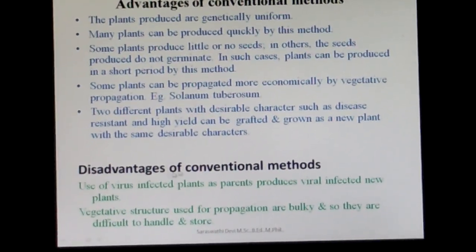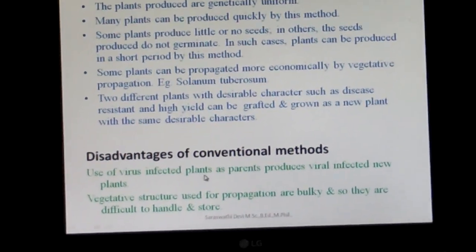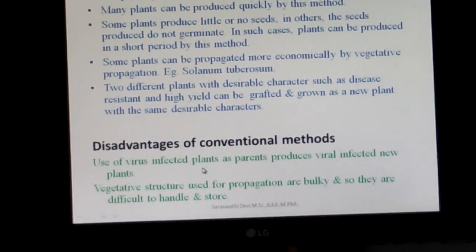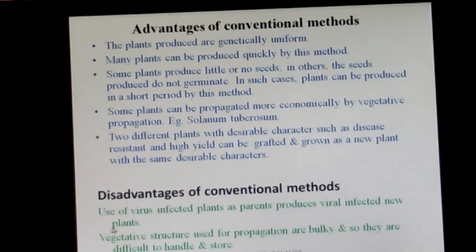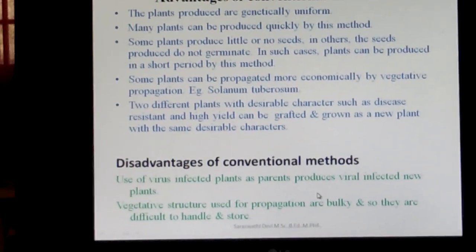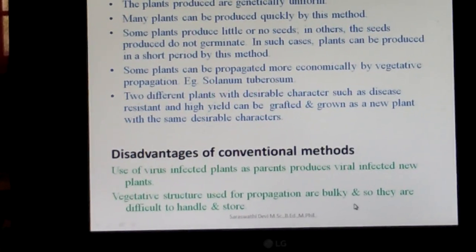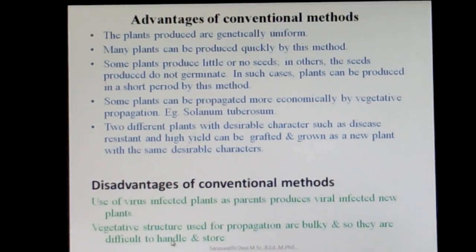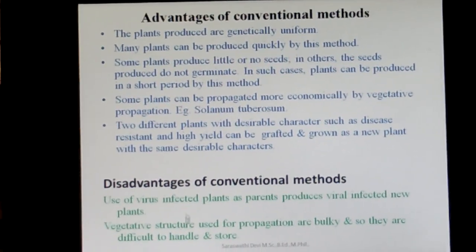The disadvantages of conventional methods are: if the parent or egg plant is infected by bacteria or viruses, all the new individuals produced will also be infected; and the structures used for propagation can be bulky, making handling and storage very difficult. These are the disadvantages of conventional methods.